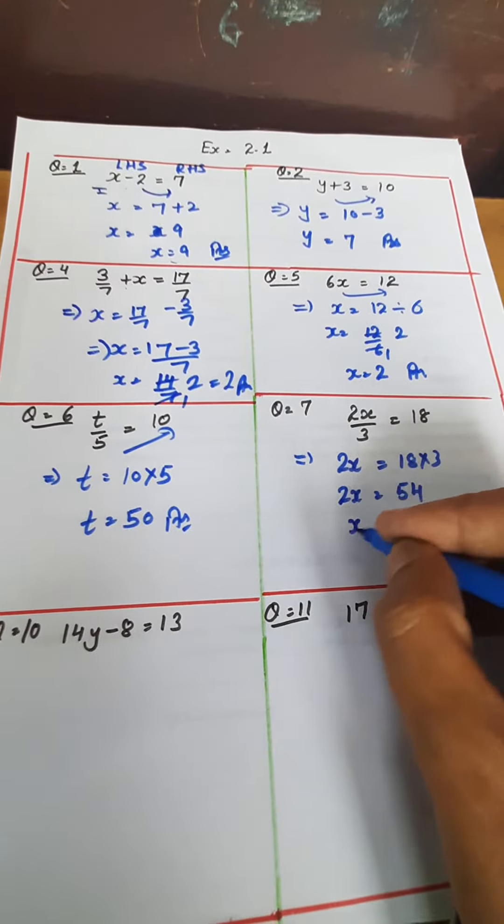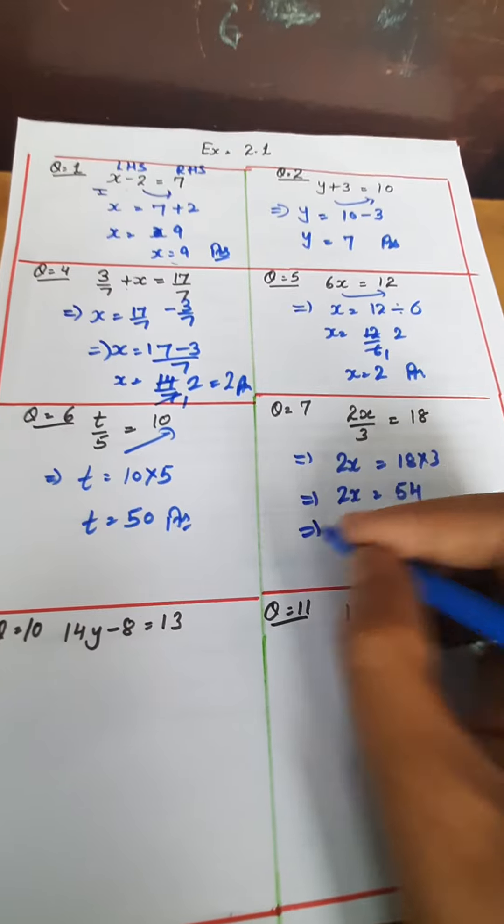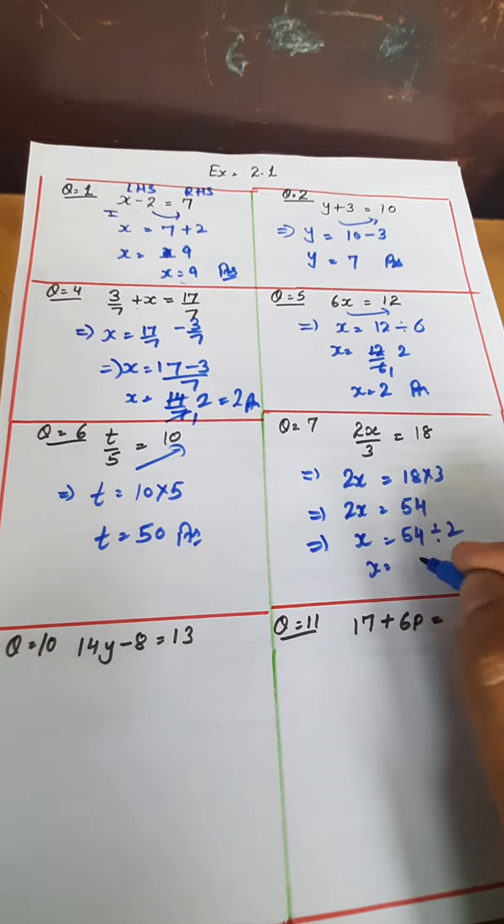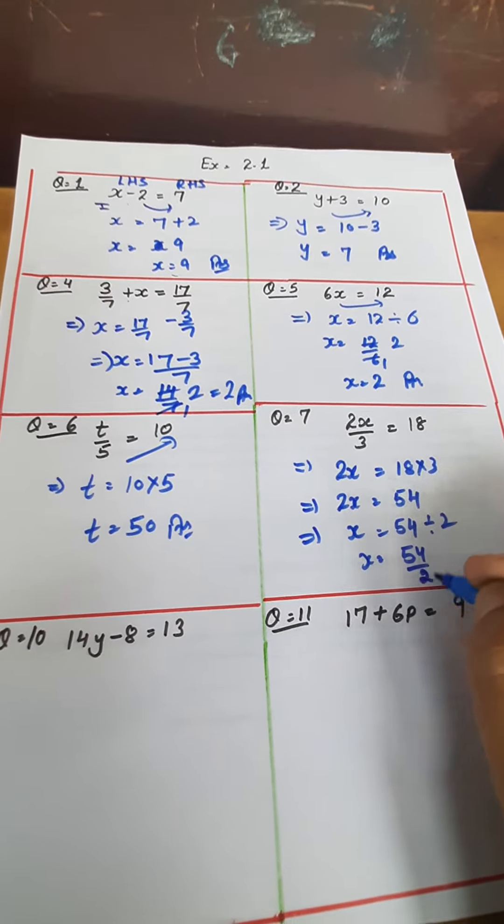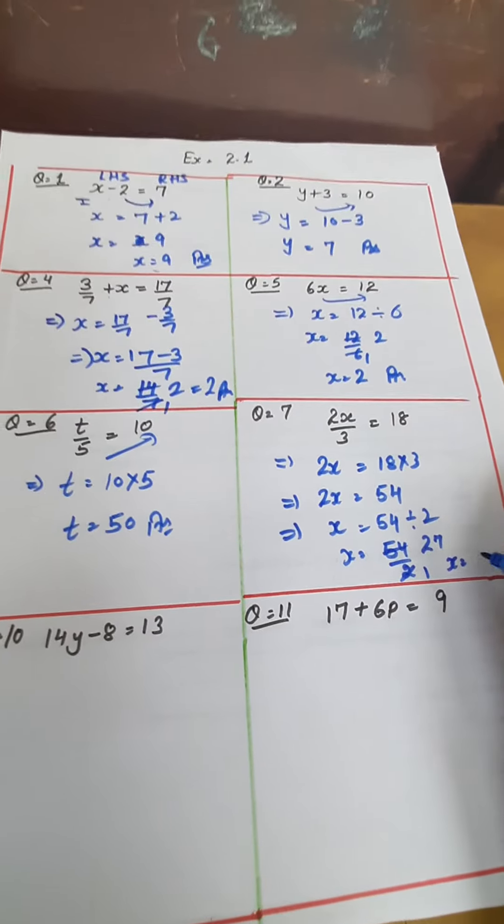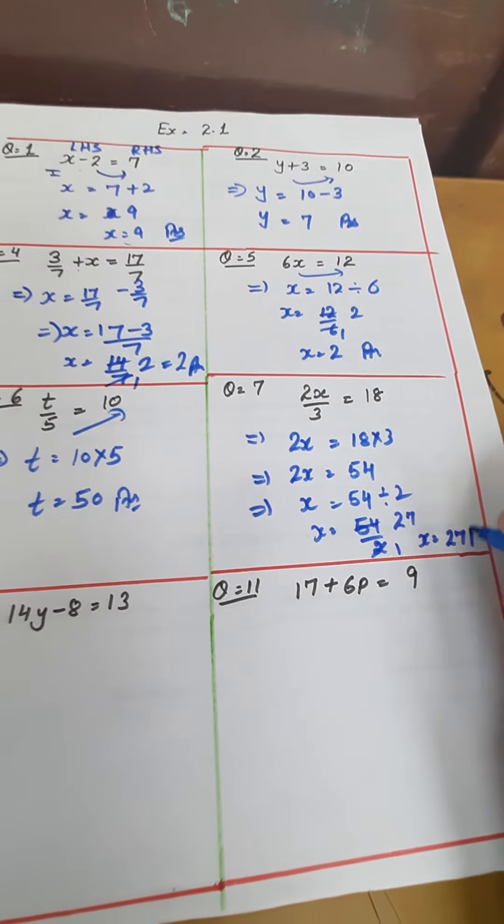Now it is in multiply. Multiply will change into divide. So constant will be divided. x comes out to be 54 upon 2. 2 into 1 is 2, 2 into 2 is 4, 2 into 7 is 14. So our answer will be x equals 27.